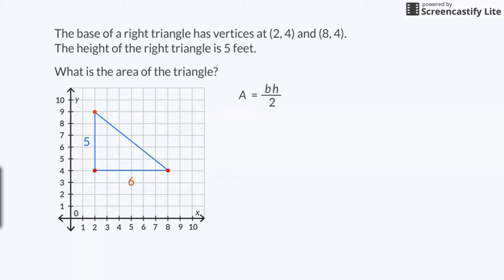5 times 6 equals 30. 30 divided by 2 is 15. The area of the triangle is 15 square feet.